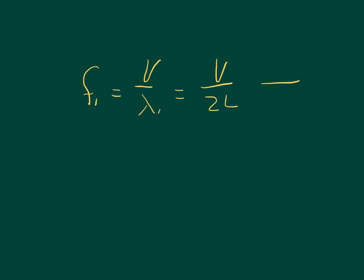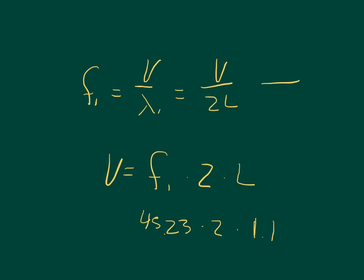Solving for velocity first: velocity equals the fundamental frequency times 2 times L. So that's 45.23 Hz times 2 times 1.1 meters, since 1.1 is the effective length. Multiplying all of that out, the answer for Part B is 99.506 meters per second.